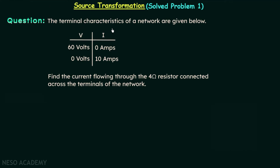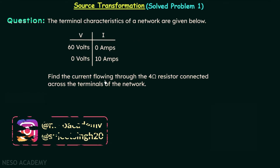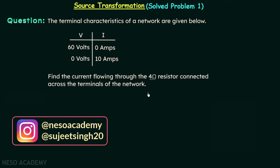The terminal characteristics of a network are given. We are required to find the current flowing through a 4 ohm resistor connected across the terminals of the network. This is problem number one on source transformation.